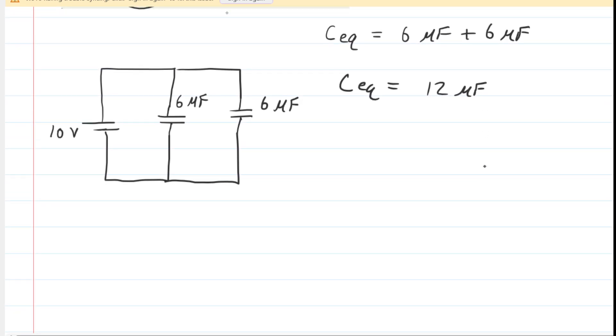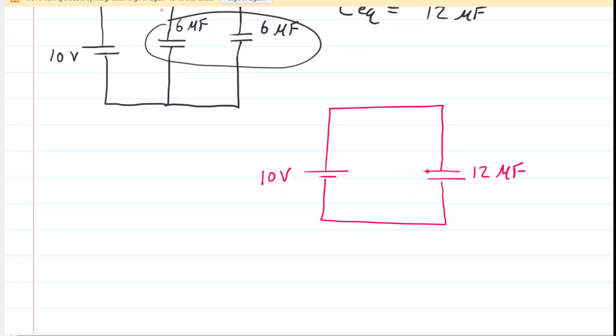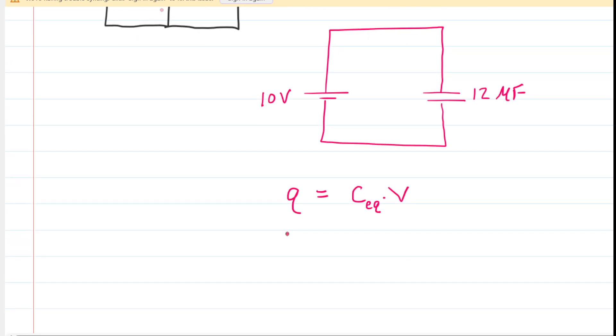We're going to redraw the circuit, combining these two capacitors into a single equivalent capacitor. Once we've done that, we can calculate the total amount of charge stored on this capacitor. The battery provides a potential difference, and that potential difference sends charges flowing through the circuit. Those charges accumulate on each plate, one plate being positive, the other negative. To get the total charge stored on this equivalent capacitor, we take the equivalent capacitance and multiply that by the potential difference across the plates, which is supplied by the battery.